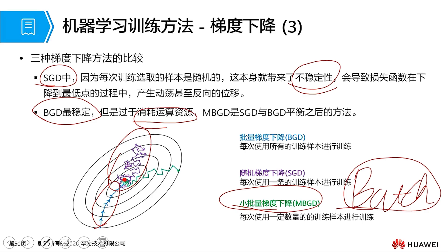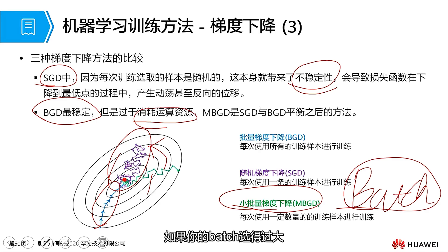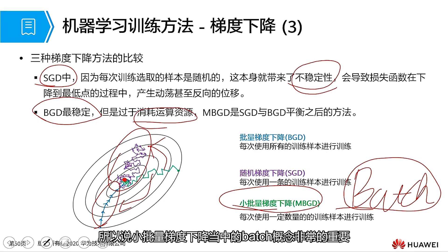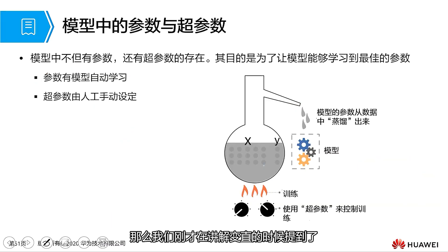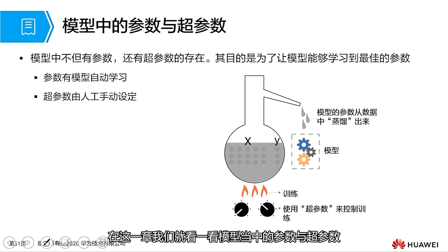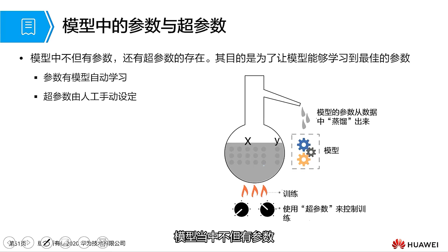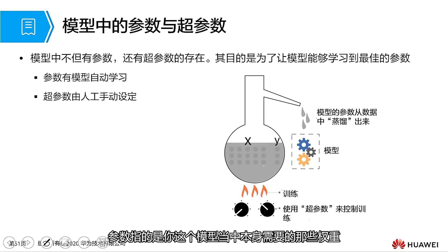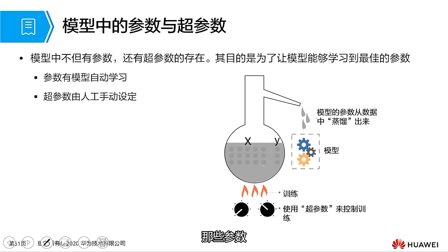Either all or one — mini-batch gradient descent is the best compromise. The concept of batch, as a hyperparameter, is very important. If you choose a batch size that is too small, you may lean towards stochastic gradient descent. If you select a batch size that is too large, you may lean towards batch gradient descent. So the batch concept in mini-batch gradient descent is critical. When explaining batch, it was mentioned that it is a very important hyperparameter. We all know what parameters are, but what are hyperparameters?